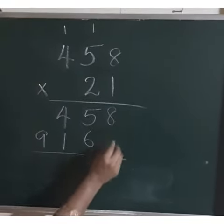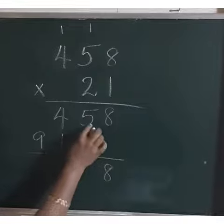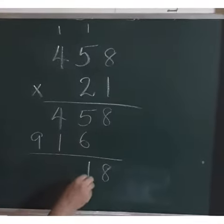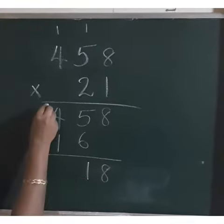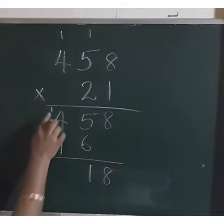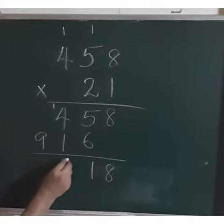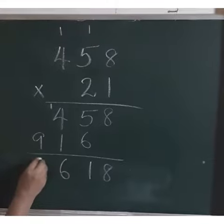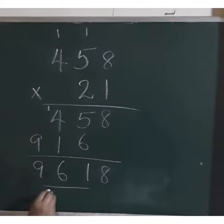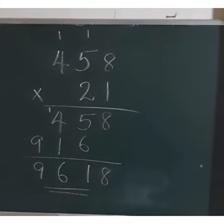And then, addition. 5 plus 6 is 11. So, we have to write 1 here and carry over 1. 1 plus 4 is 5. 5 plus 1 is 6. And here, 9. So, our answer is 9680.